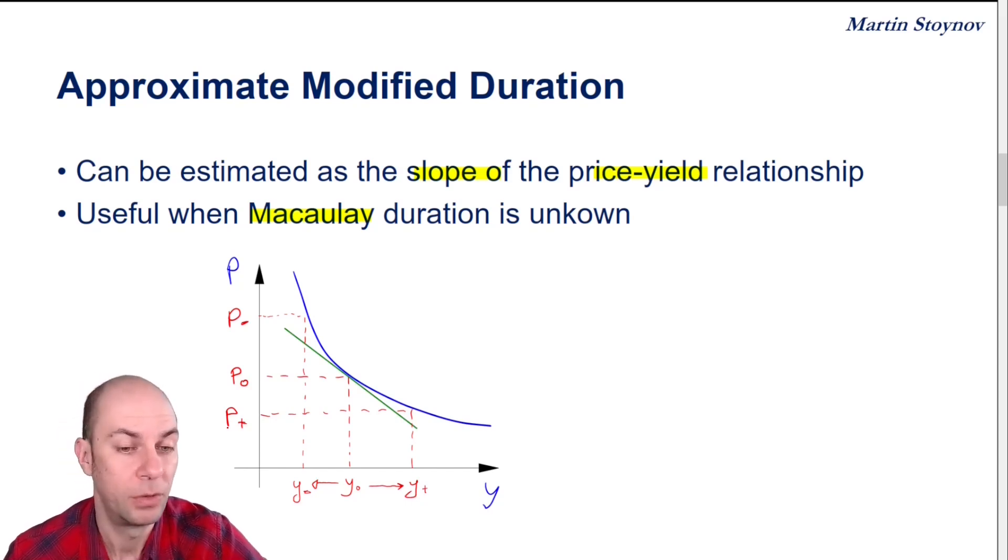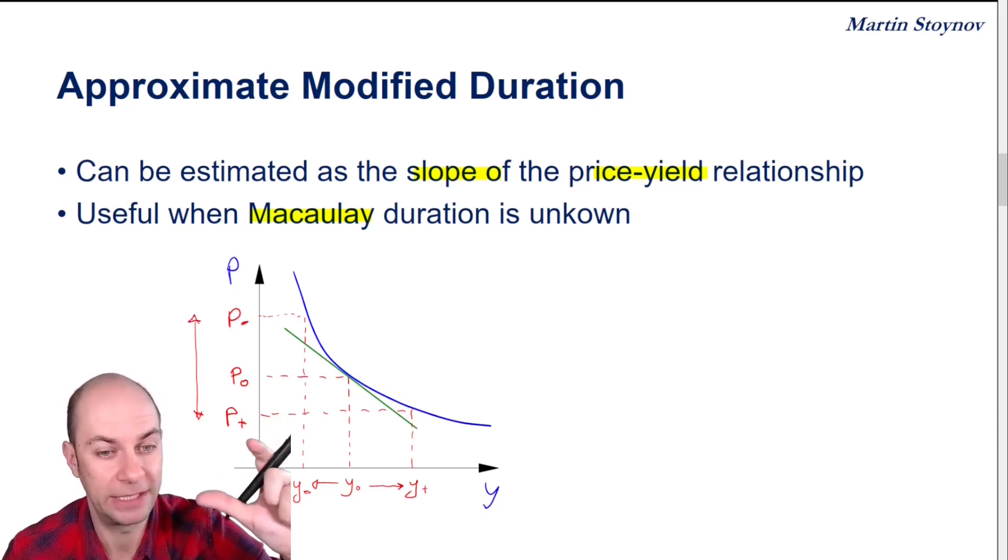So what I can do now in order to estimate the slope is I can actually look at this entire distance. So the distance between P- and P+, that is effectively the total change when I shock yields up and down.